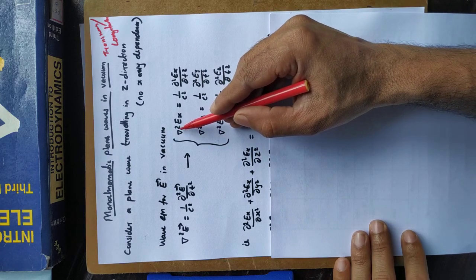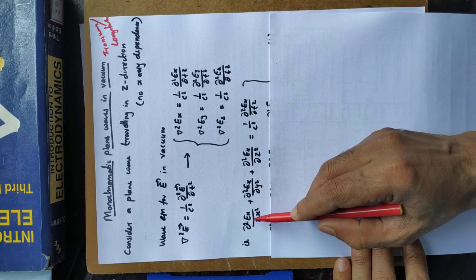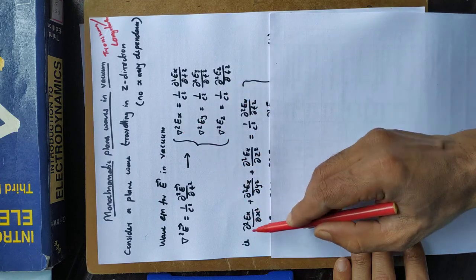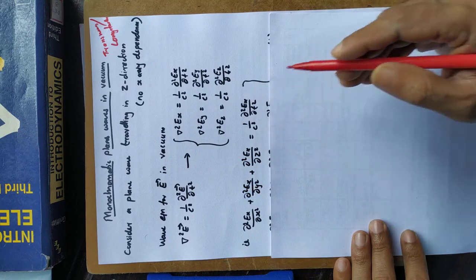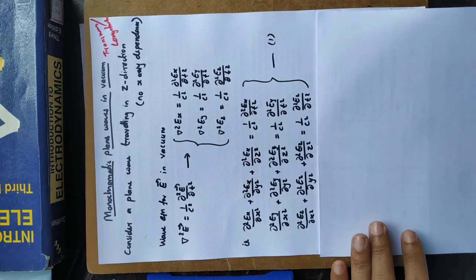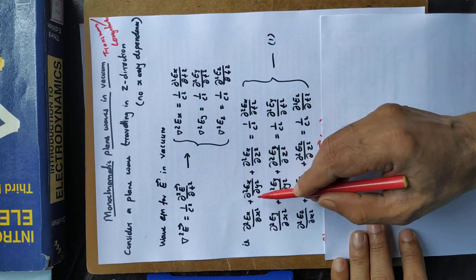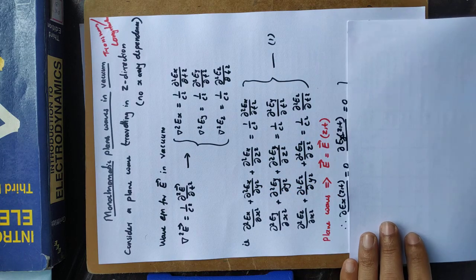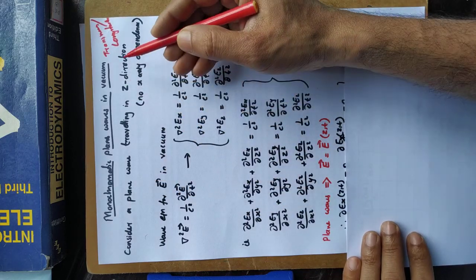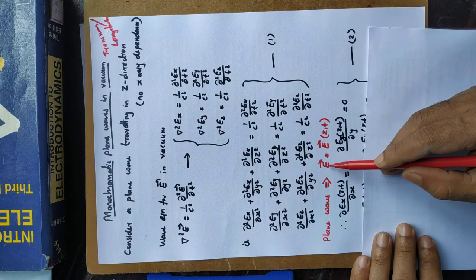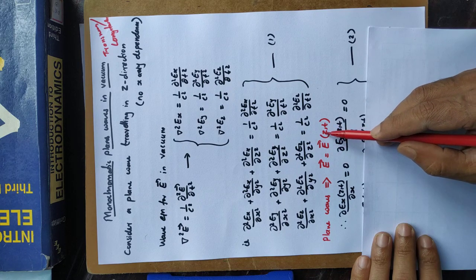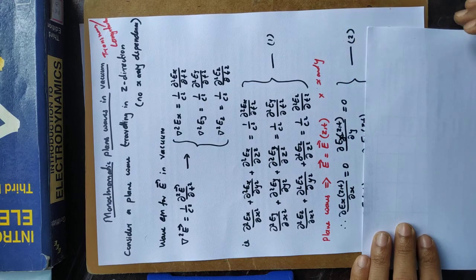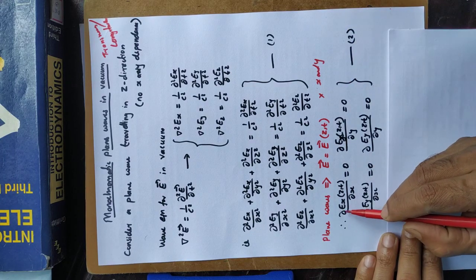The Laplacian operator in Cartesian coordinates is ∂²/∂x² + ∂²/∂y² + ∂²/∂z². These three equations can be expanded from the Laplacian. Since we consider a plane wave propagating in the z direction, E is a function of z and time only — it is independent of x and y.